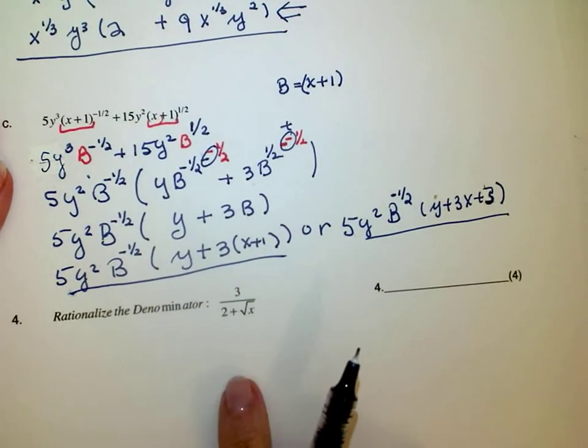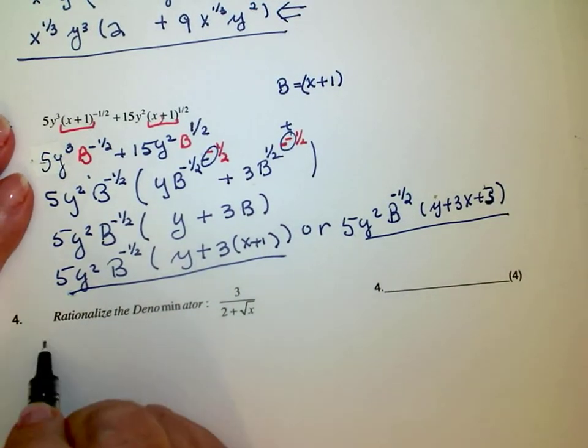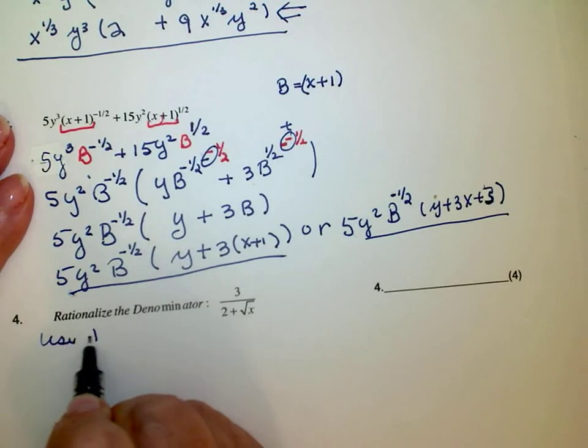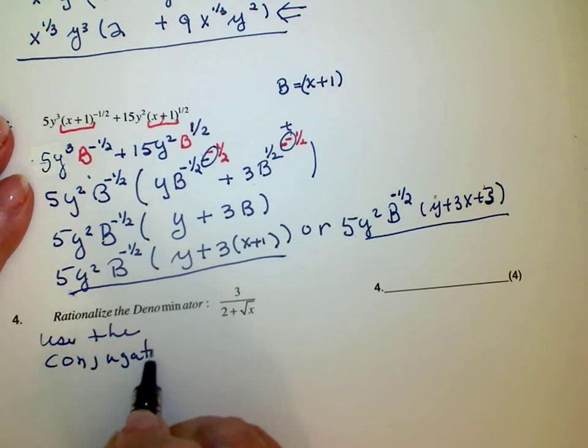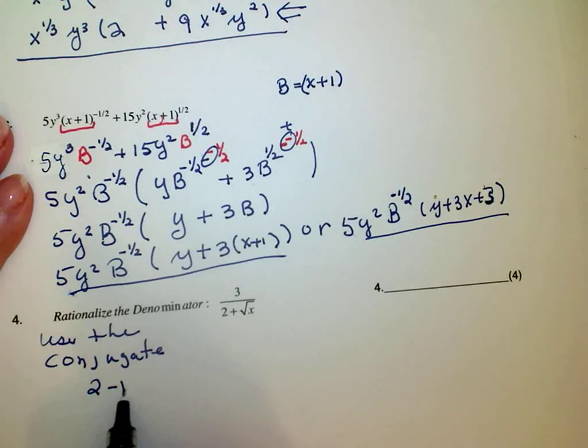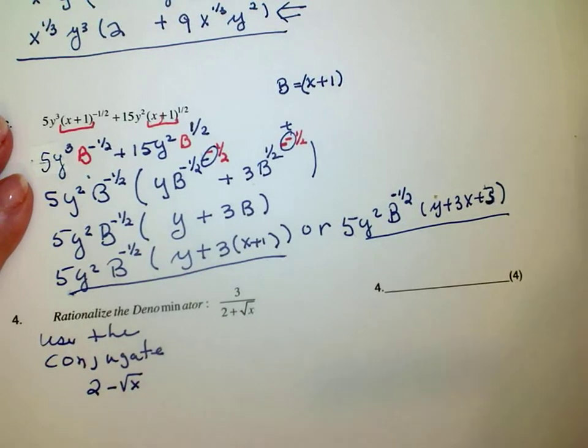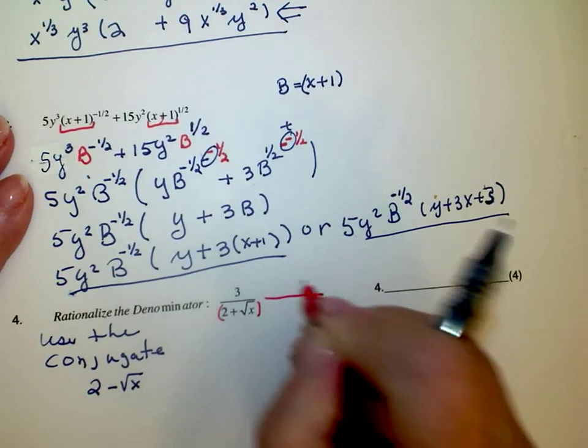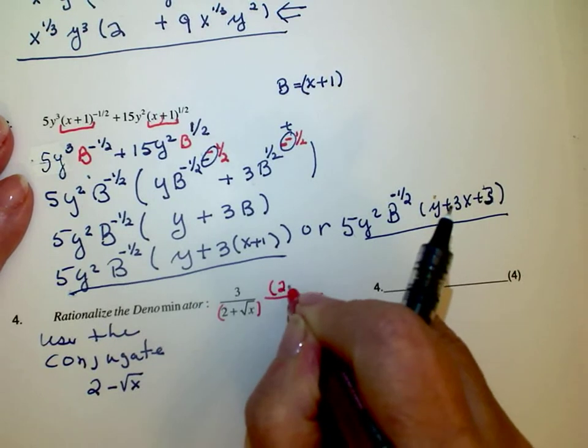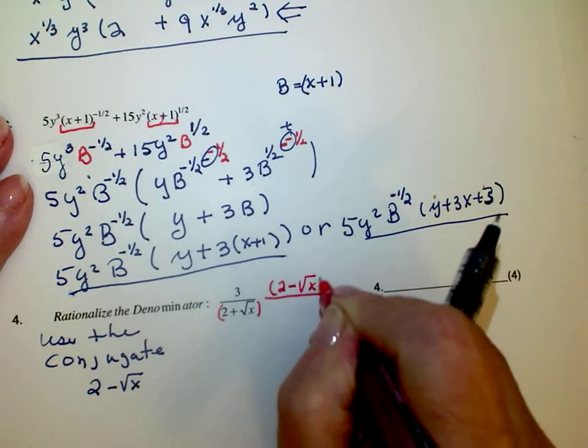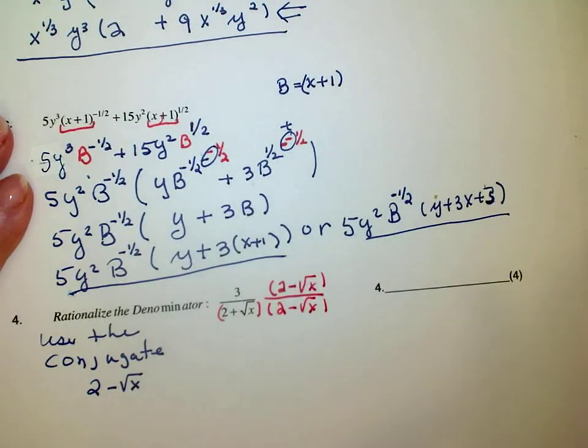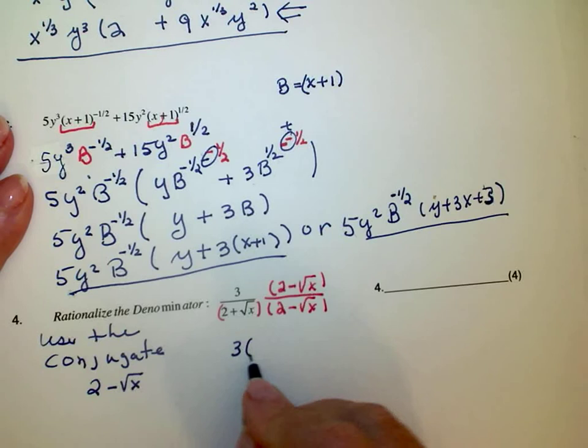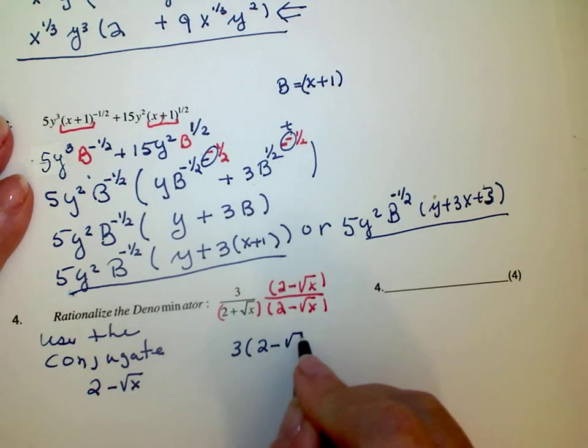Now rationalize the denominator means to remove the radical, and so I need to use the conjugate. So the conjugate of 2 plus x is 2 minus the square root of x. So multiply the numerator by 2 minus the square root of x, the denominator by 2 minus the square root of x. I get 3 times 2 minus the square root of x.